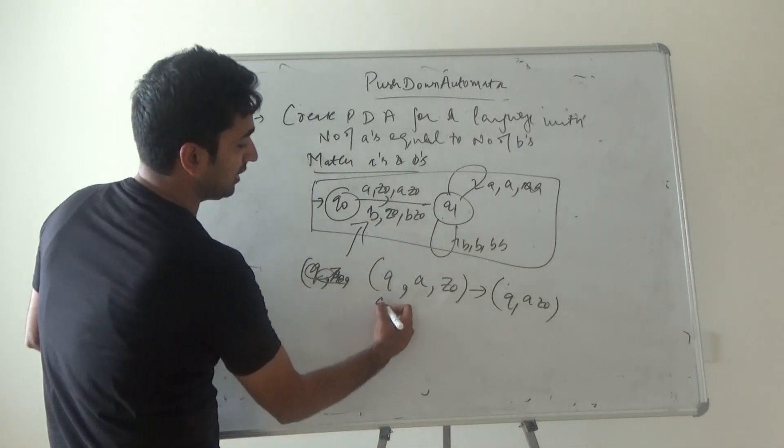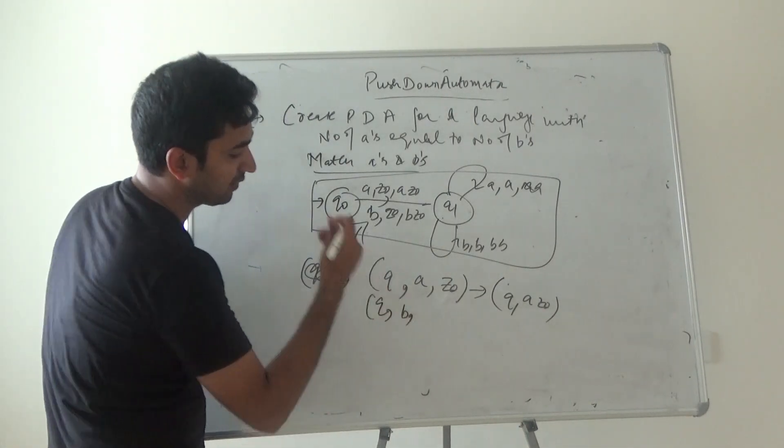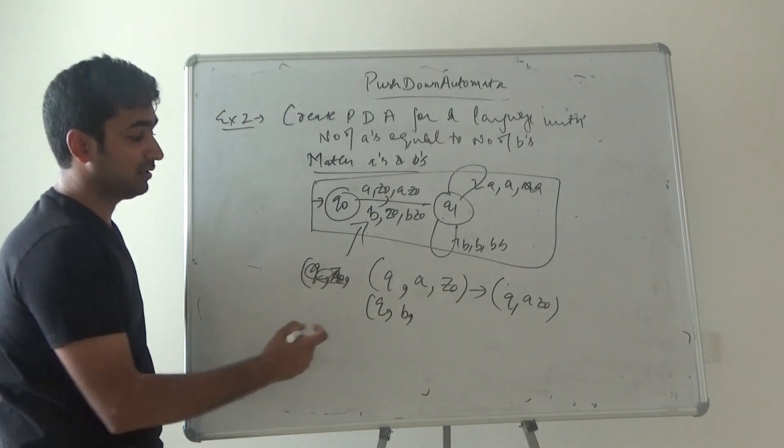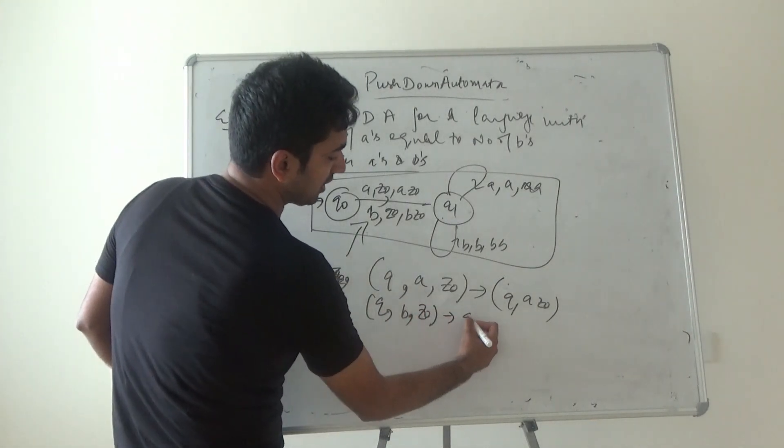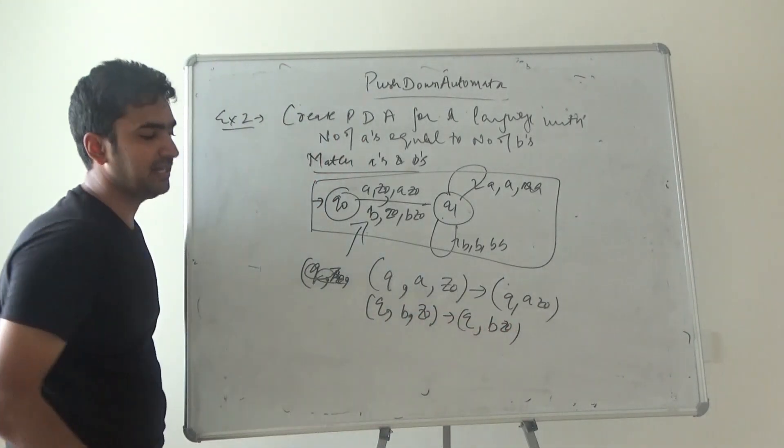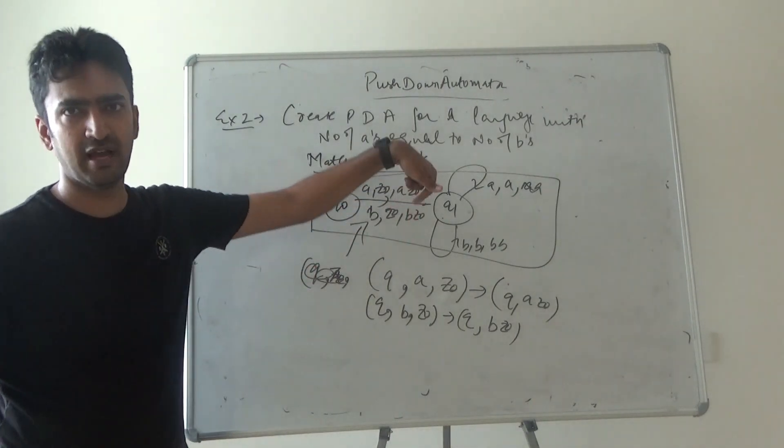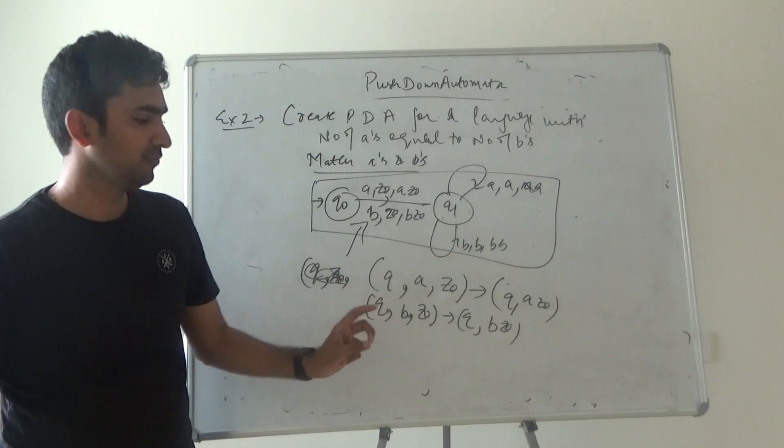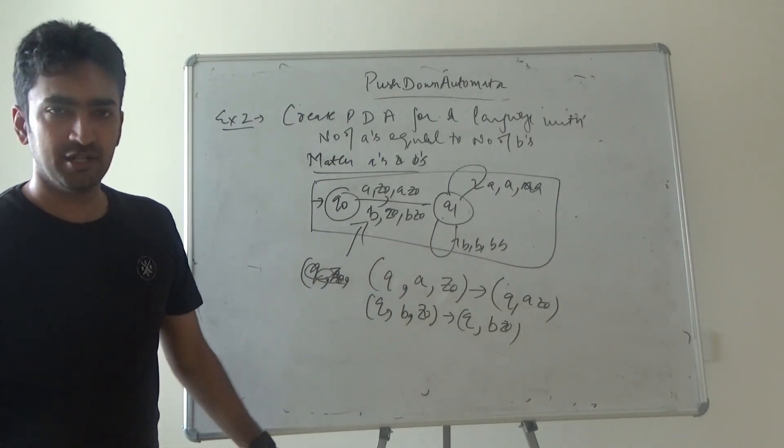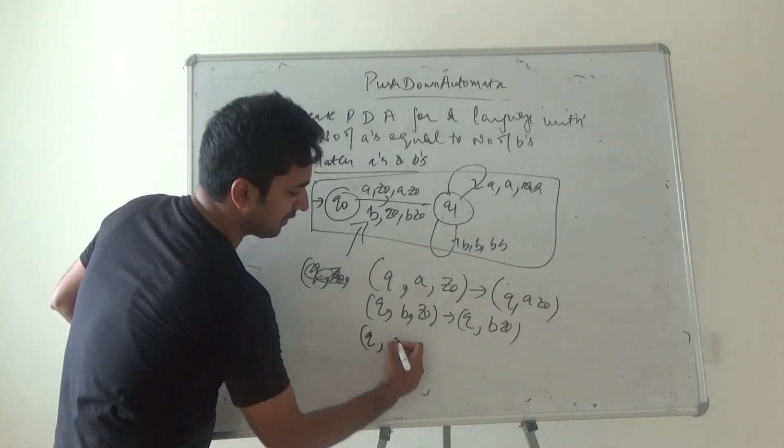Guys, it can be any number of states - it depends on the question whether you're using extra states or not, it's up to you. So it's a very basic scenario. If any a comes and top of the stack is a, it will get pushed. Why? Because a's are not matched with a's, they will be matched with b's.